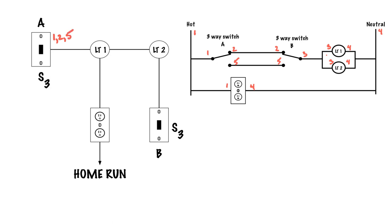Looking at the lights, they are three and four. They're both going to be three and four because they're in parallel, so I put that number up beside these lights. Then down at the receptacle — the receptacle is a one and a four, so I put that by the receptacle.